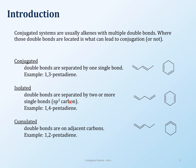An isolated system is when the double bonds are far away — generally separated by two single bonds, or one sp3 carbon. So here you have sp2, sp2, sp2 carbons, but in the isolated system there's an sp3 carbon in the middle separating the double bonds.